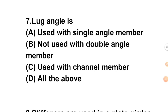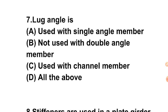Question 7: Lug angle. Options are: A) Used with single angle member, B) Not used with double angle member, C) Used with channel member. Lug angle is used with a single angle member — it is L-shaped and used as a connection member. If you use a single angle member, that is the connection; for double angle member it is not used. Options A, B, C — all three are correct, so the answer is D.